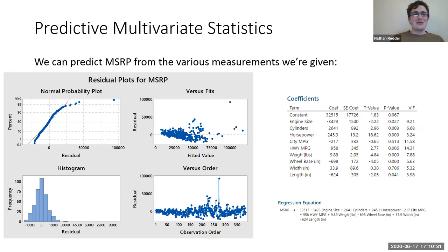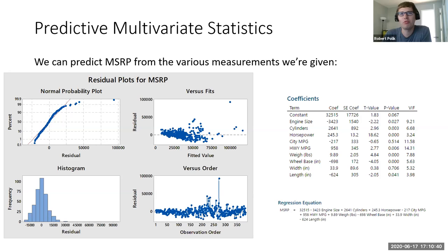12 cylinders is ridiculous for a car. I think there might be a 12-cylinder in this dataset — that's like the extreme, and presumably that one is pretty expensive.